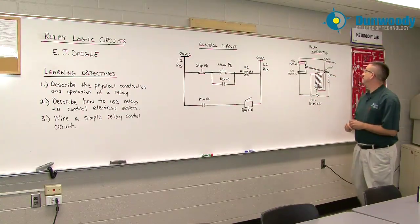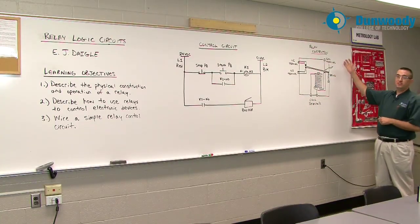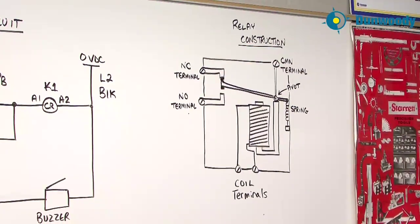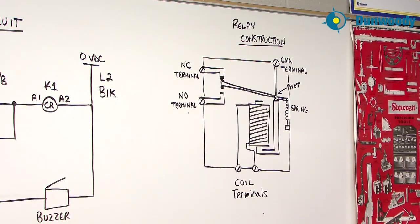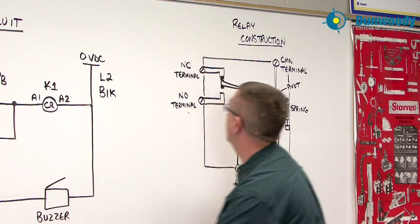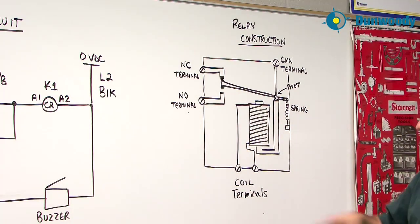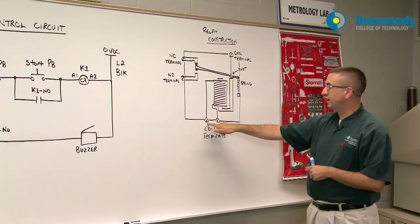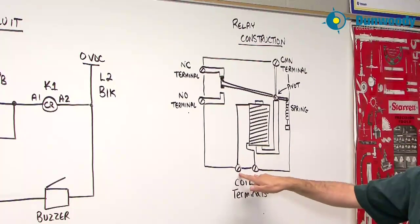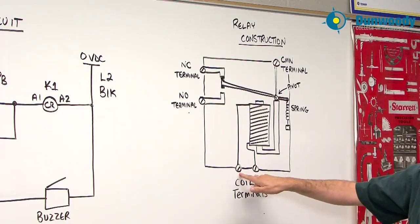Now if we go over here, this is the physical construction of a relay to kind of give you an example here. I'll try to grab a different marker here to give you a different color. There are a set of terminals just for the coil. So you see a couple of screw terminals here that you'll be able to pull wires up to when we get up into the lab.